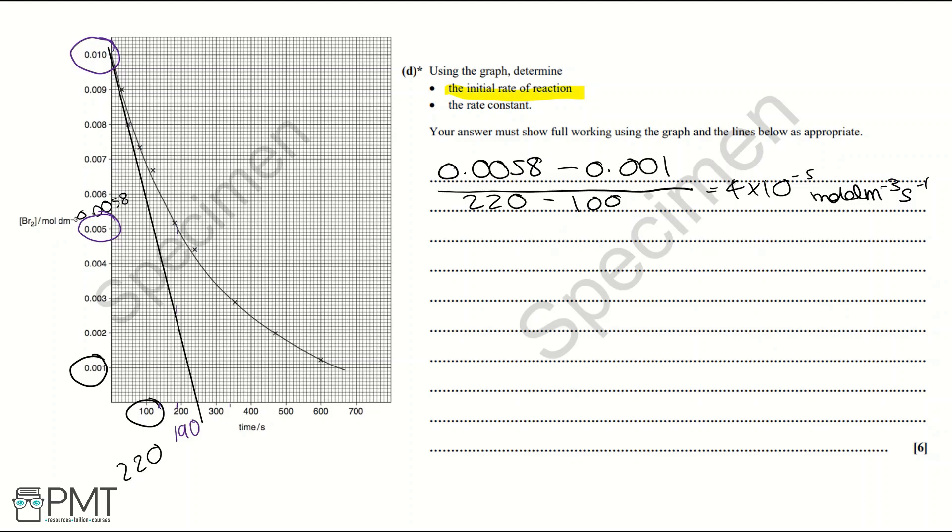Then we need to look at another half-life. So we could use 0.006 and 0.003. 0.006 is at 140 seconds and 0.003 is at 340 seconds. So we've got slightly different half-lives. We've got a half-life of 200 and a half-life of 190. But because this graph is quite small, we're going to say that we have a constant half-life. So we're going to write this: half-life is constant and we would then specify what the half-life is. So we could say that it's 190 seconds.